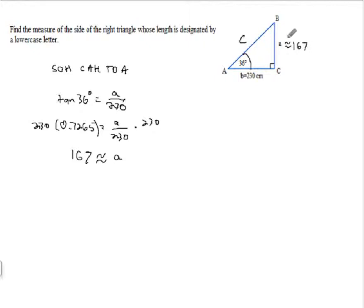So, I want to use this 230. That 230 is the adjacent side to my 36 degrees. So, that means I have to use the cosine because cosine is adjacent over hypotenuse. So, the cosine of 36 degrees is equal to the adjacent 230 over the hypotenuse of C.